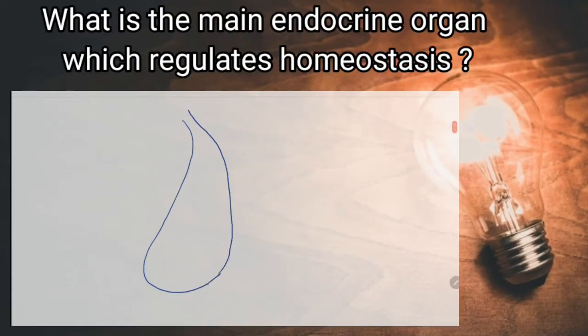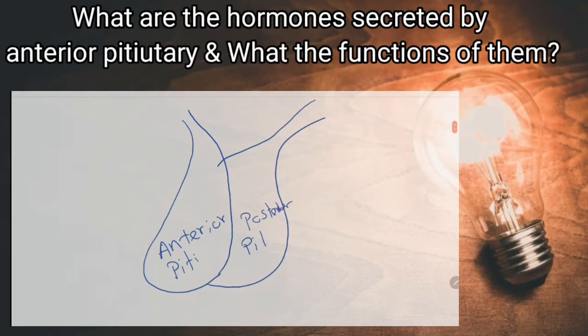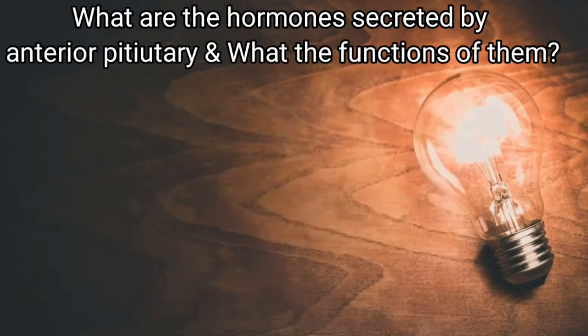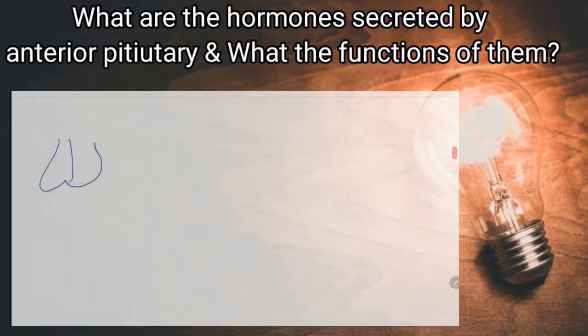What is the main endocrine organ which regulates homeostasis? Pituitary gland. What are the hormones secreted by anterior pituitary and what are the functions of them?